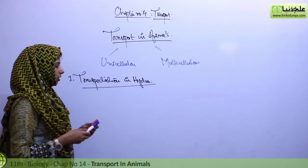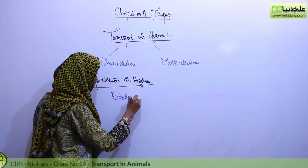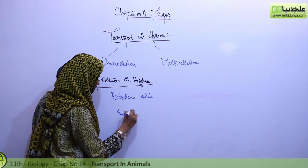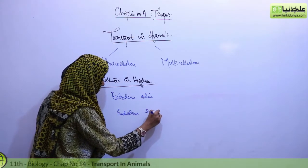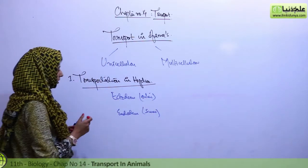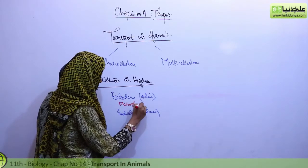Hydra inside there are two body layers. First is the outer layer ectoderm, and the inner layer is the endoderm. There is a jelly-like material, a jelly-like mesoglia that is present.